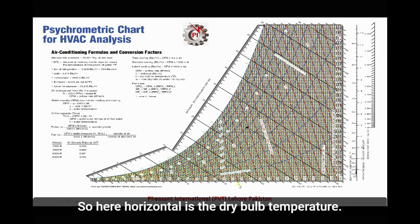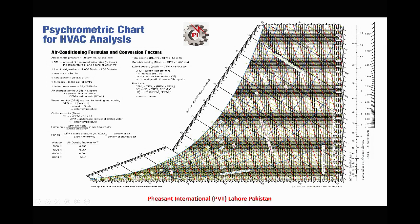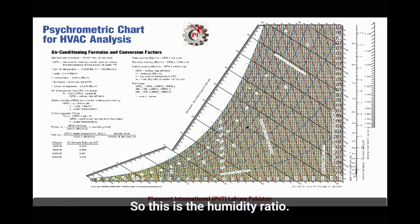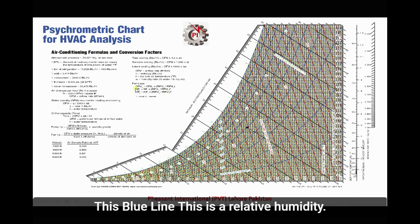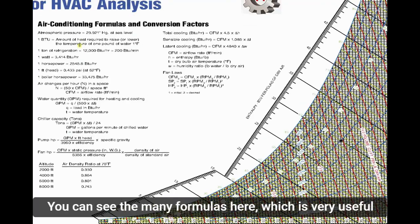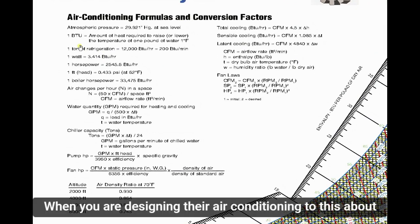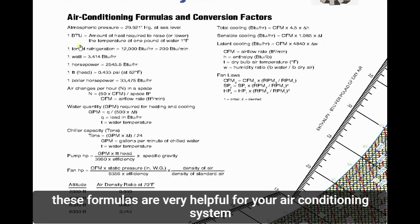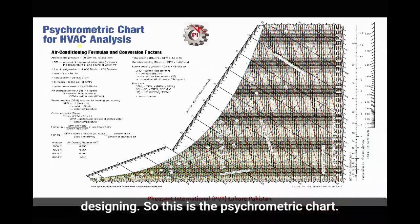The horizontal axis is the dry bulb temperature. Here is the wet bulb temperature shown by the red line. This is the humidity ratio, this is enthalpy, and these blue lines are the relative humidity. You can see the many formulas here which are very useful for designing the air conditioning system.